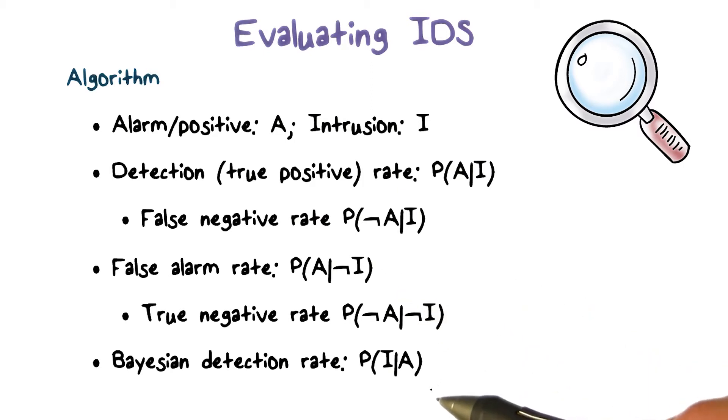Bayesian detection rate is the probability that, given there's an IDS alert, how likely there's actually an intrusion.